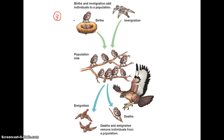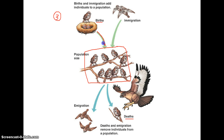On one hand we have births and deaths. Births of new individuals obviously increase population size, whereas deaths remove individuals from the population. So births help increase population size while deaths decrease it. But there's also immigration and emigration — what we call individual movement. Not only do births and deaths influence population size, but so does the movement of individuals.